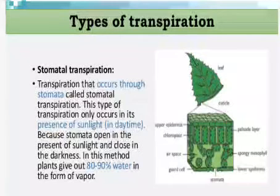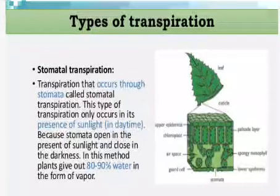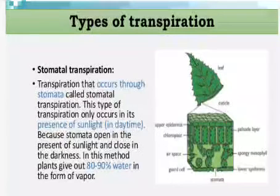Stomatal transpiration is transpiration that occurs through the stomata. This type of transpiration occurs in the presence of sunlight during daytime because stomata open in the presence of sunlight and remain closed in darkness. In this process, plants release 80 to 90 percent of water in the form of water vapors.